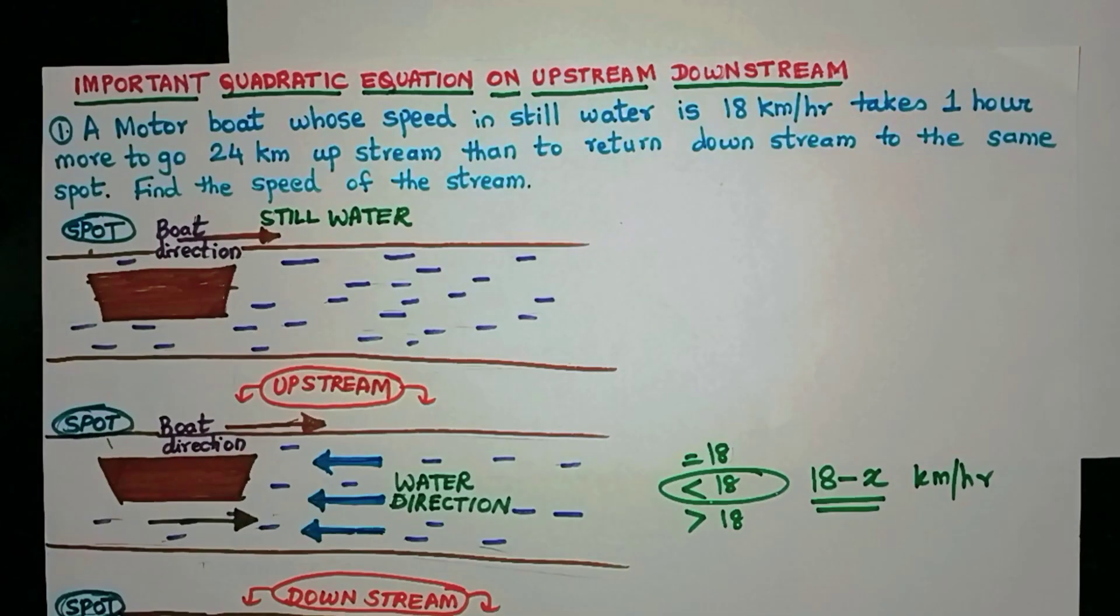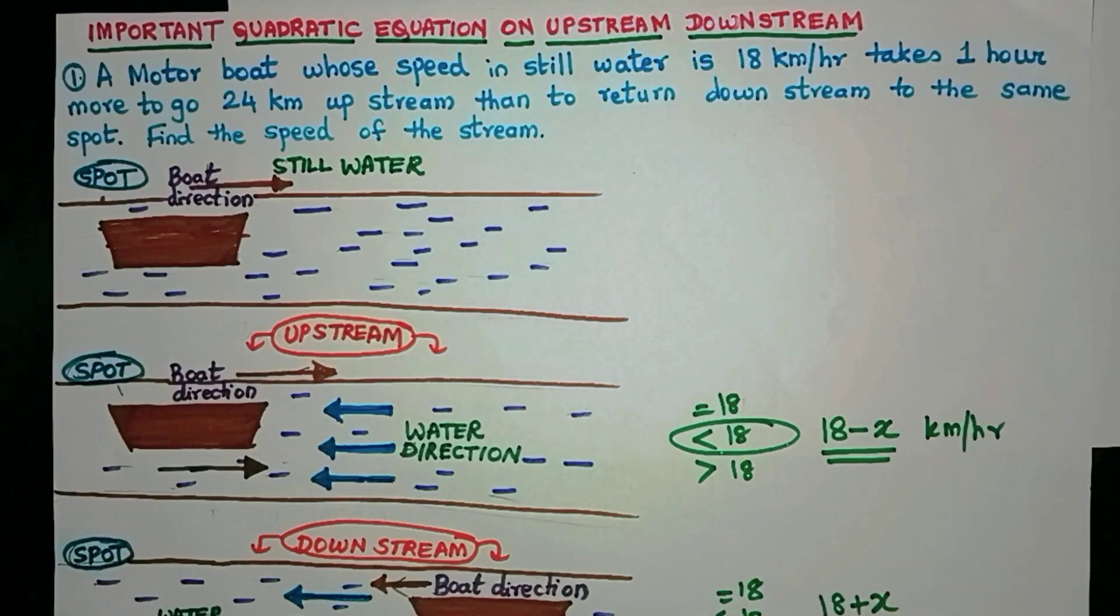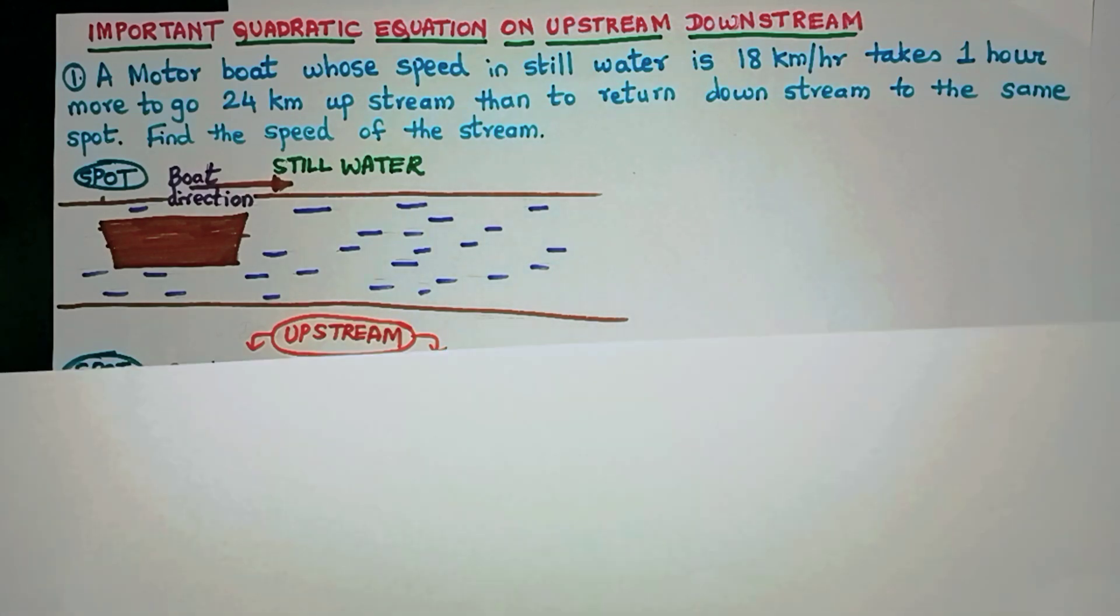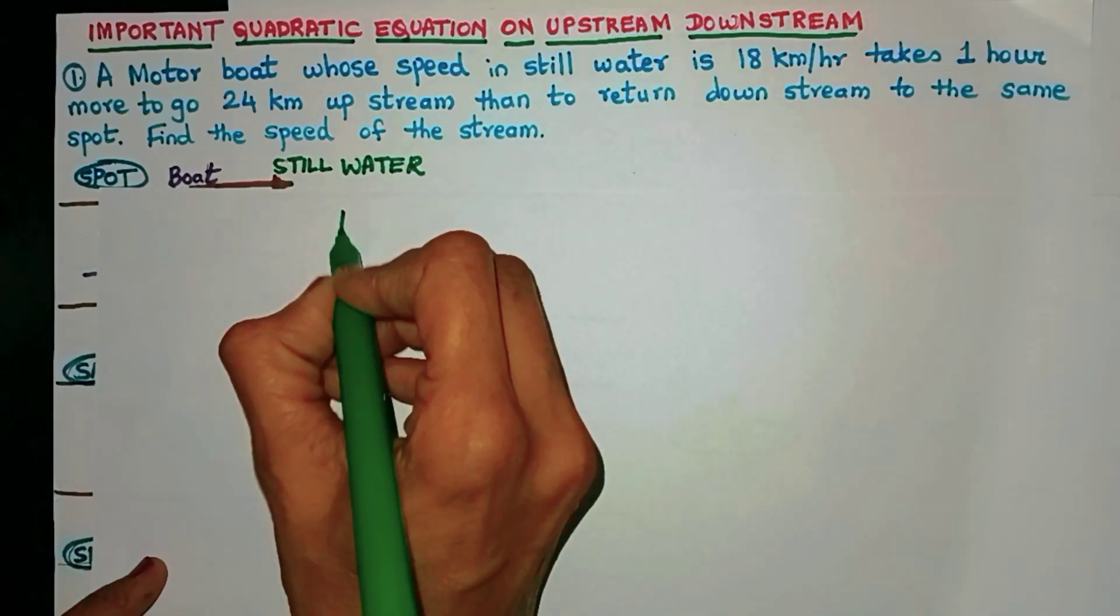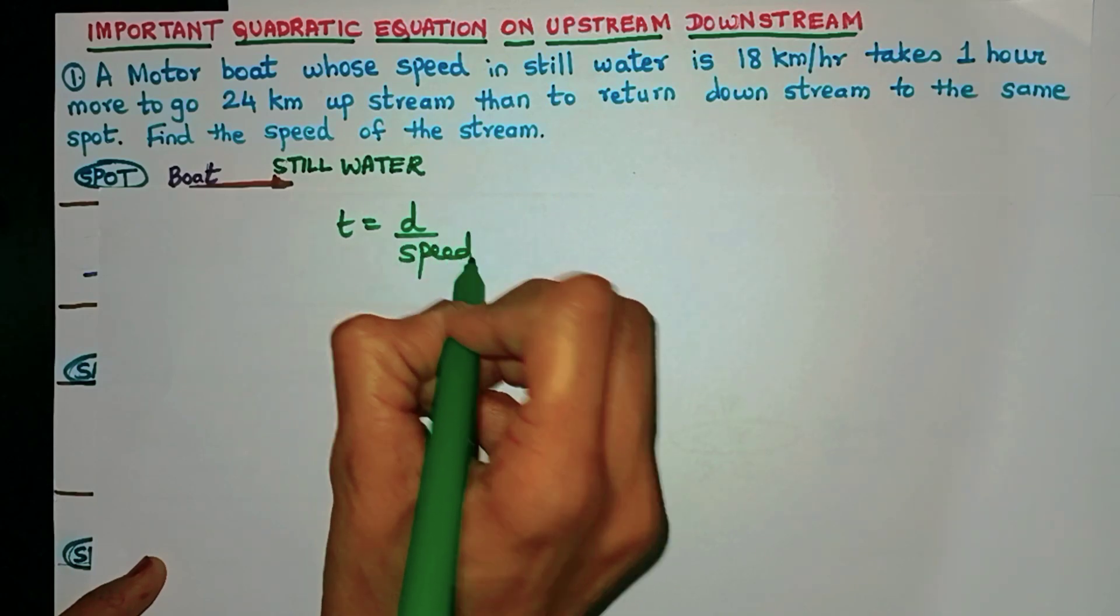It's given to us that the upstream time is one hour more than the downstream time. Since they are talking about time, let's see what is the relation between time, distance and speed. We have all learned in science that time is distance by speed.